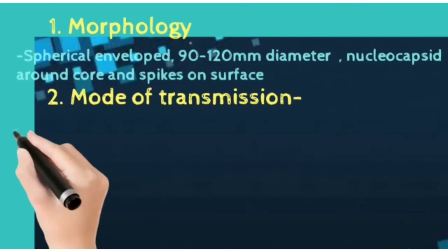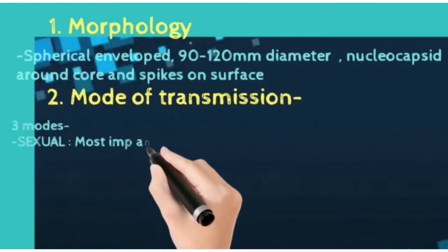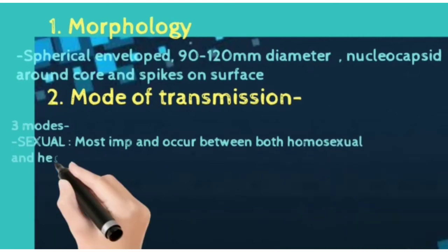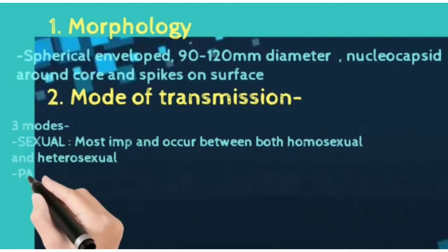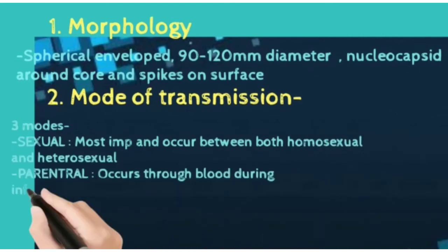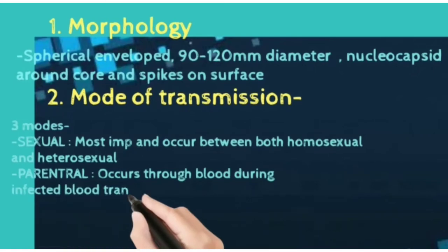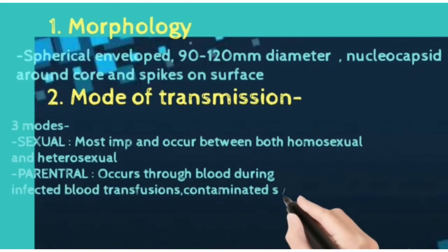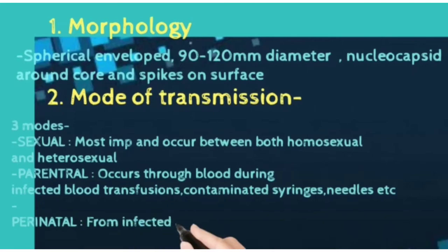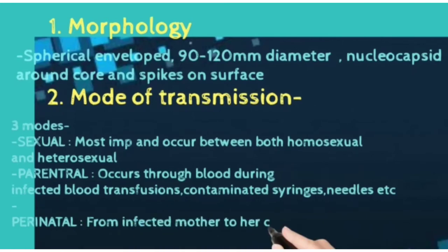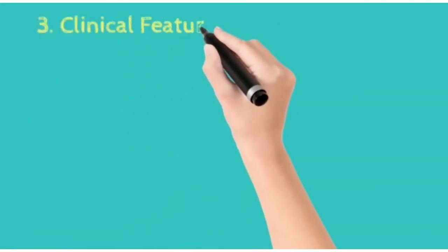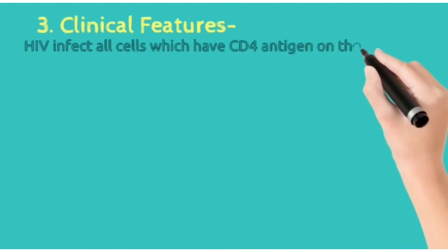About the mode of transmission, there are three modes. First is sexual mode of transmission, which is very important. Second is parenteral, which occurs through the blood during infected blood transfusions, contaminated syringes, etc. Third is perinatal transmission from an infected mother to her child.